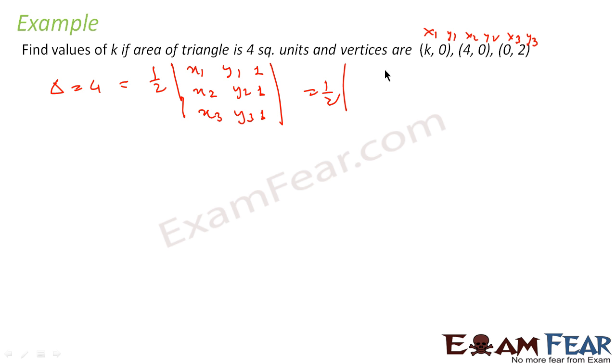Replacing the values I get: X1 is K, Y1 is 0 and 1. X2 is 4, Y2 is 0 and 1. X3 is 0, Y3 is 2 and 1. So if you solve this, this comes out to 1 by 2 times K times 0 times 1 is 0 minus 2 times 1, that is K times minus 2, plus 0 plus 1 times 4 times 2, which is 8 minus 0, so 1 times 8. This is nothing but 1 by 2 times 8 minus 2K.